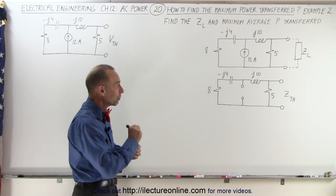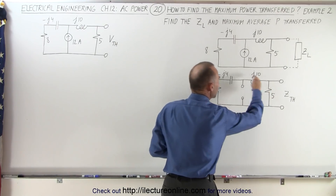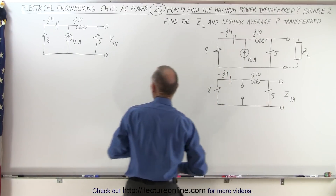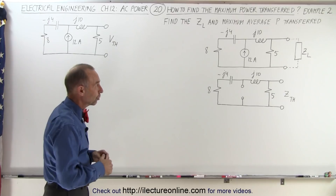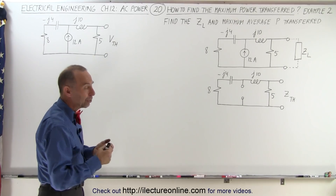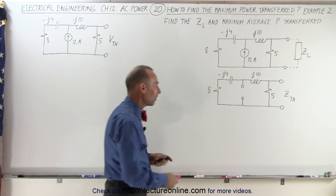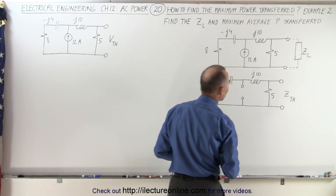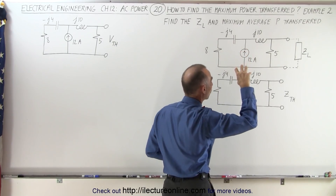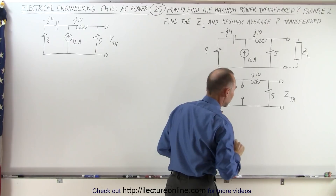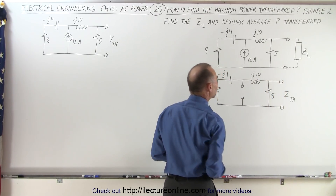Remember it's the maximum average power transfer, which means we're going to have to find the equivalent Thevenin impedance of the circuit and the Thevenin voltage of the circuit, in order to determine what the load impedance should be and to determine the maximum average power transfer. So first let's find the Thevenin impedance. We simply remove the current source, leaving an open circuit, and now we try to find the impedance across the two endpoints of the circuit.